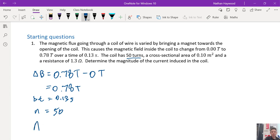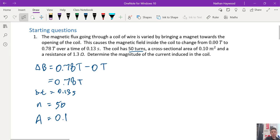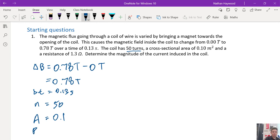It gives us the area and it gives us a resistance. I think that's about it. It wants us to find the magnitude of the current, right?